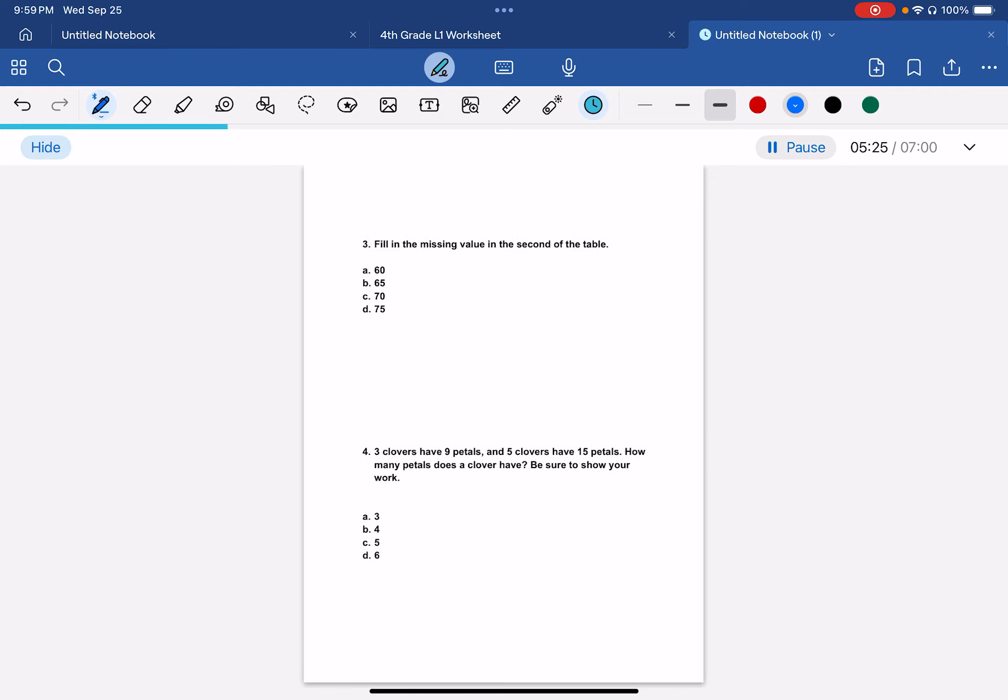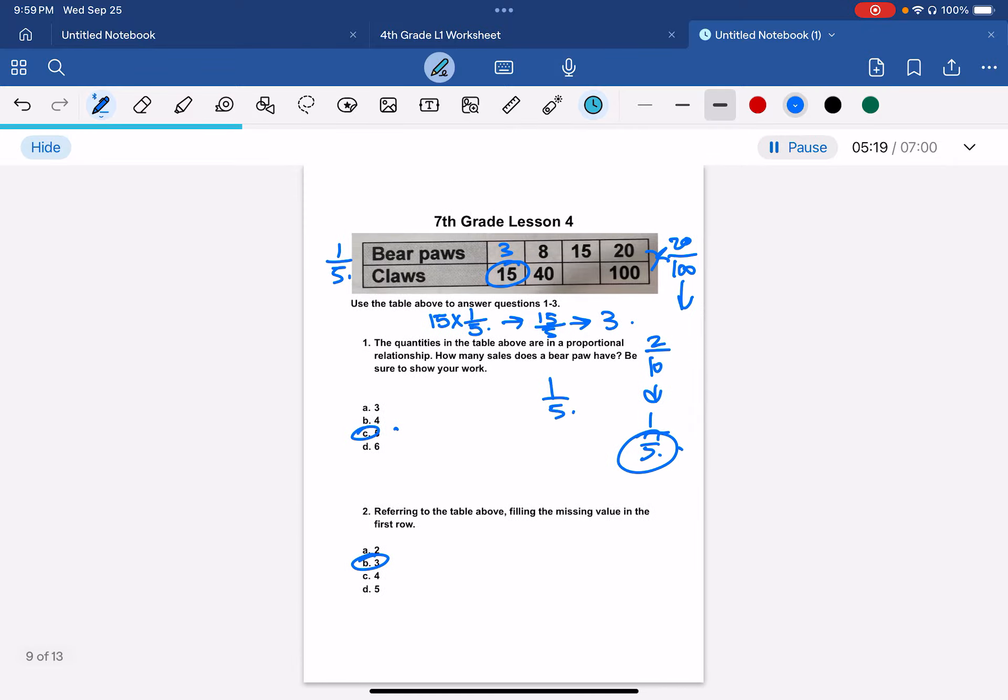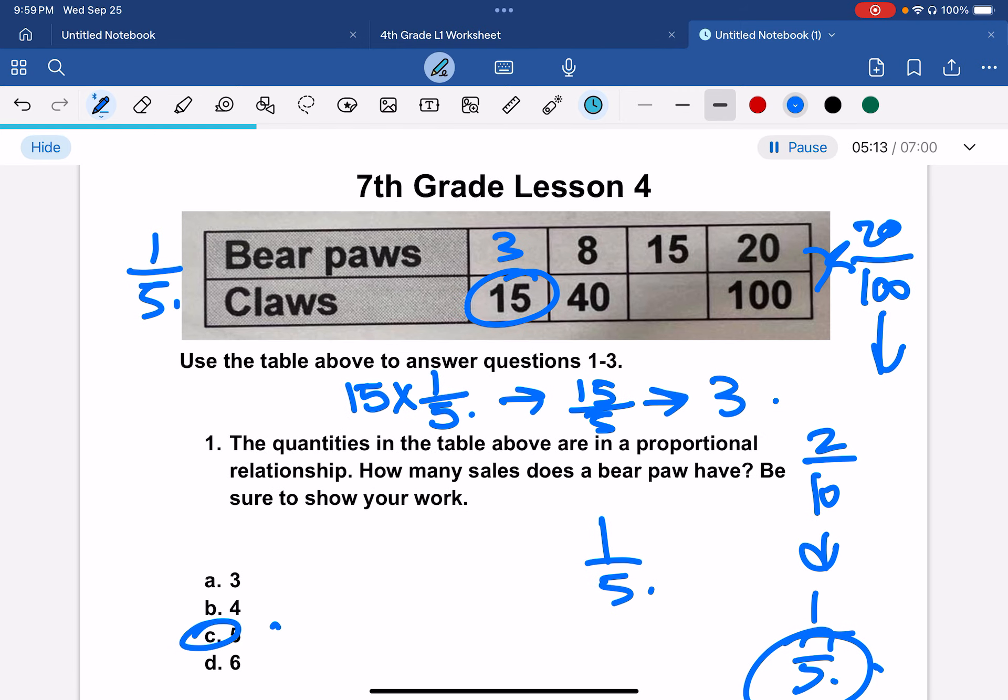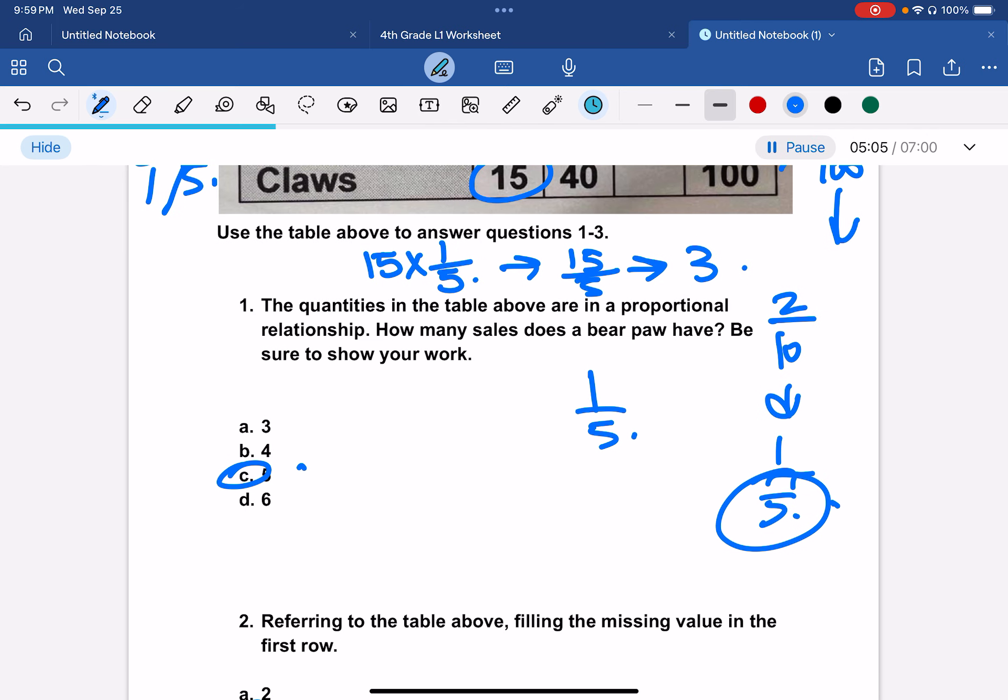Okay, fill in the missing value in the second of the table. Okay, so we would just plug this in, but we would do 5 over 1 instead of 1 over 5.